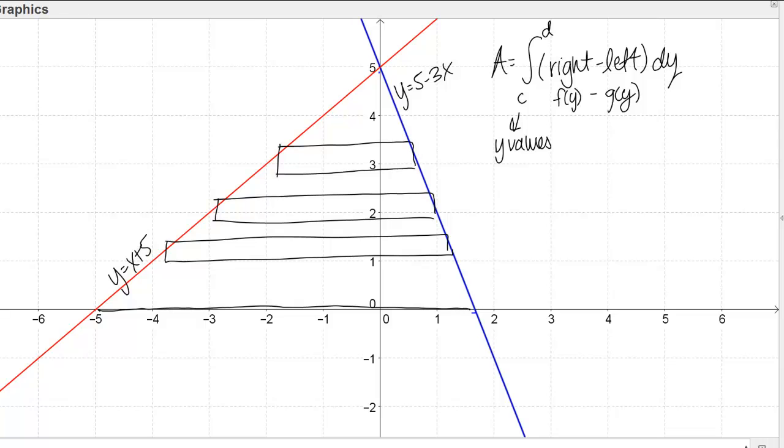Then what I need to do first of all is I need to rewrite my equations of my lines so that they're functions of y instead of functions of x. That's not too hard in this case because they're just lines. If we take y equals x plus 5 and simply solve that for x, I get y minus 5 equals x. Then I can just think of this red line as x equals y minus 5.